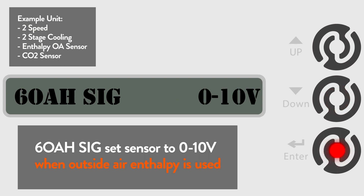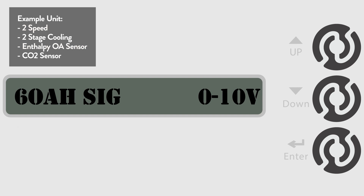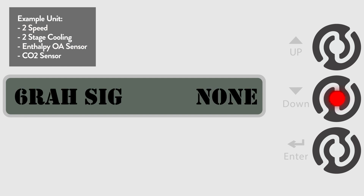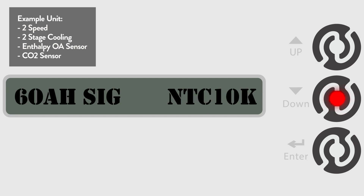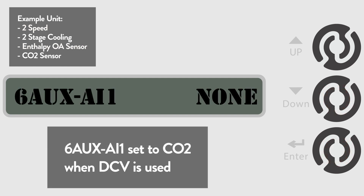Once we get to the run state section, we will set up the humidity setpoint. The default setting for CO2 is none, meaning the controller assumes that a CO2 sensor is not being used. Go to the 6 AUX AI1 menu and change the default setting from none to CO2. This tells the controller that a CO2 sensor is now being used.